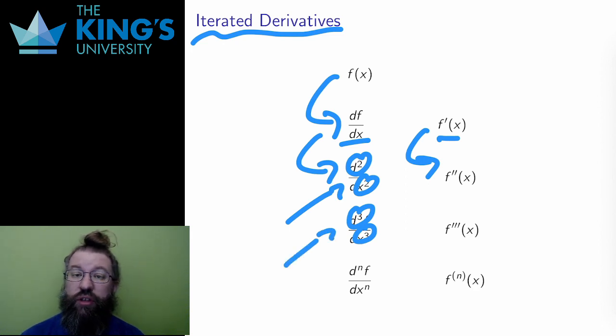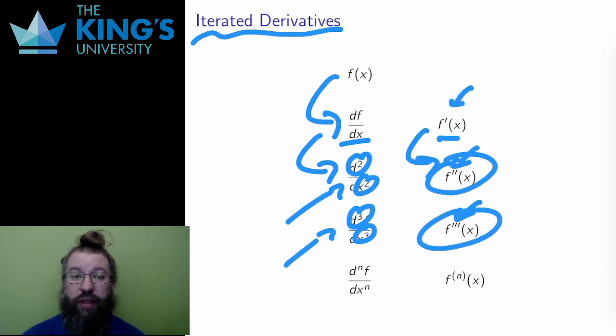In Newton's notation, I can just add more repetitions of this apostrophe. This is f double prime, the second derivative. This is f triple prime, the third derivative, and so on.